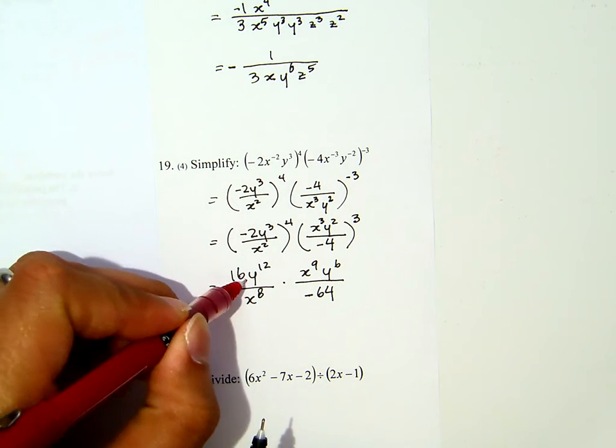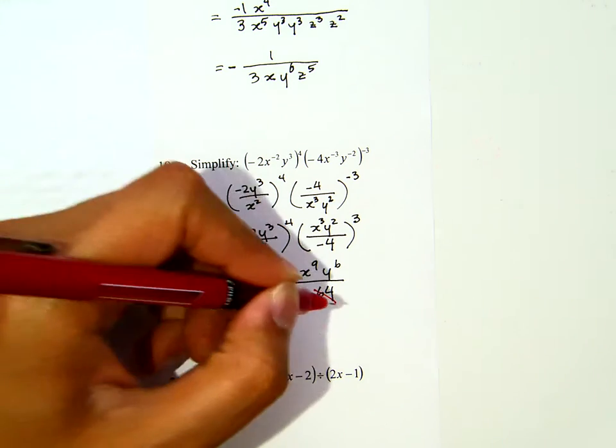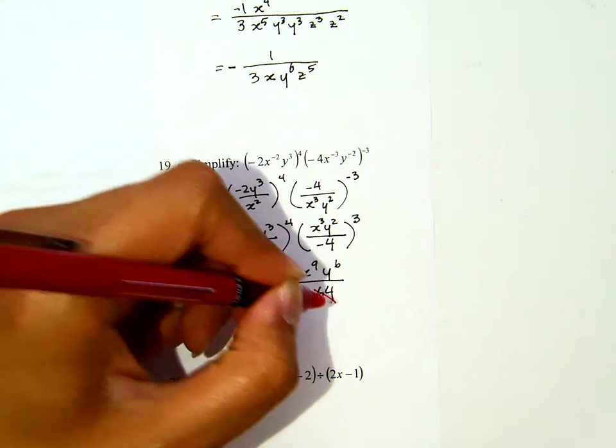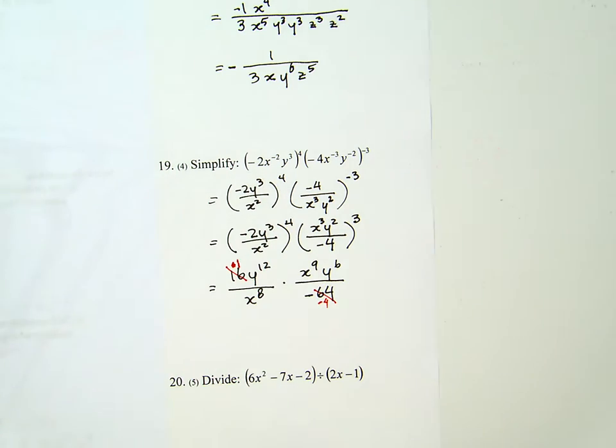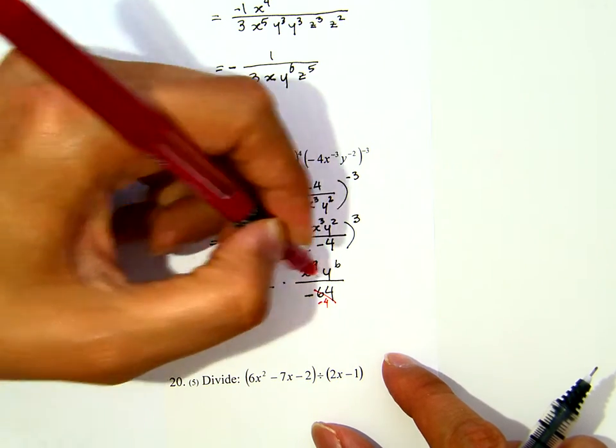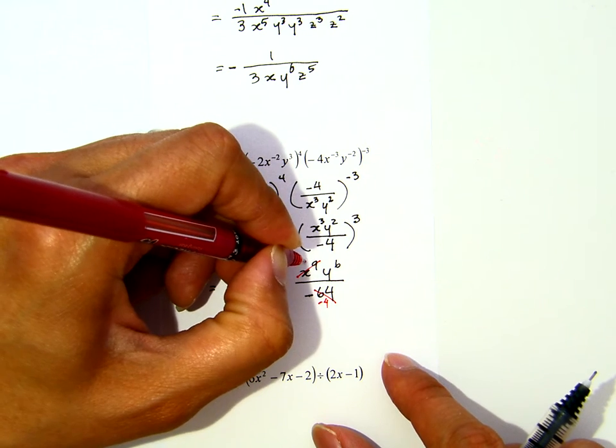Then, you will see that my 16 and negative 64 cancel. This is 1, let me put this 1 here. This is 1, and this is negative 4. And then for the x to the 8th with x to the 9th, this becomes 1, and this becomes x.